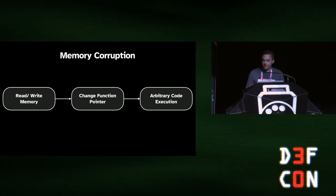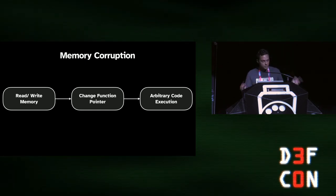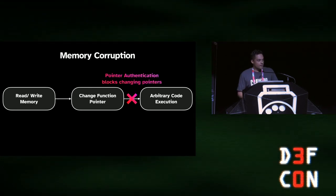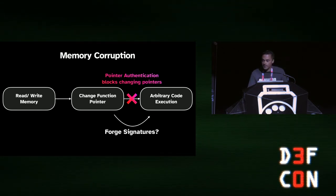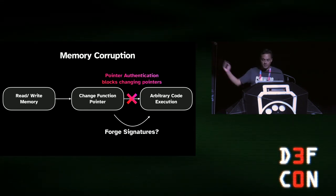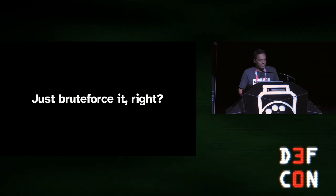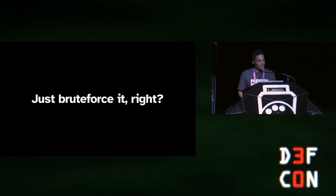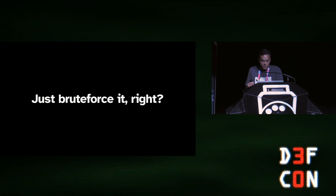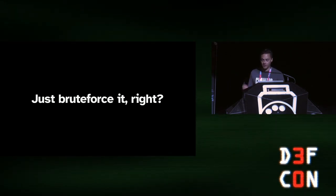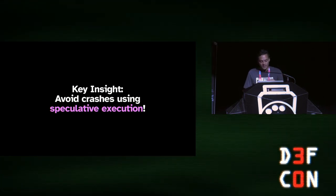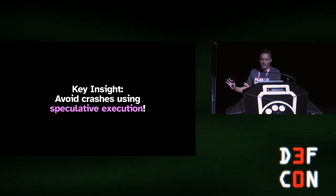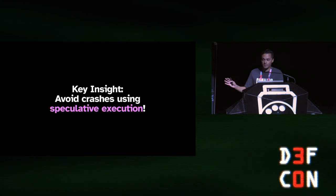The smart folks at ARM said: memory read-write bugs have been around for 40 years. We've tried to solve it and just can't. So let's add a barrier that blocks the step of changing function pointers, by signing the pointers with a cryptographic hash. If you could find a way to forge these signatures, you could bypass this protection. You might think: why not just brute force a 16-bit signature? The problem is, if you try to evaluate an incorrectly signed pointer, you're going to crash — and since today's target is the kernel, you'll crash your entire device. Our solution — the key takeaway from PAC-MAN — is that you can avoid these crashes by doing your tests in the speculative regime.